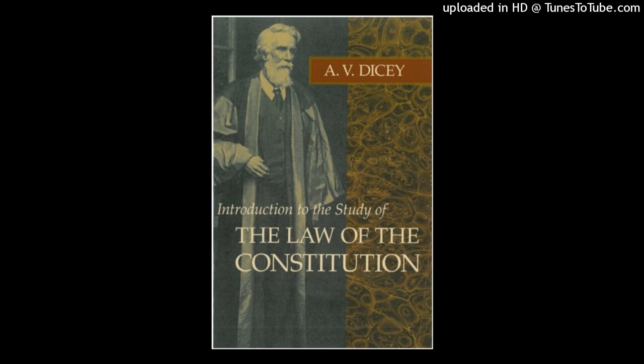Sovereignty of Parliament. The sovereignty of Parliament is, from a legal point of view, the dominant characteristic of our political institutions. Parliament consists of the King, the House of Lords, and the House of Commons acting together. The principle of Parliamentary sovereignty means neither more nor less than this: that Parliament has the right to make or unmake any law whatever, and that no person or body is recognised by the law of England as having a right to override or set aside the legislation of Parliament, and that this right or power of Parliament extends to every part of the King's Dominions.